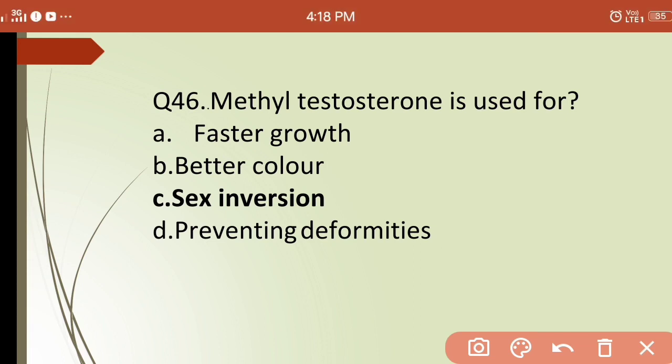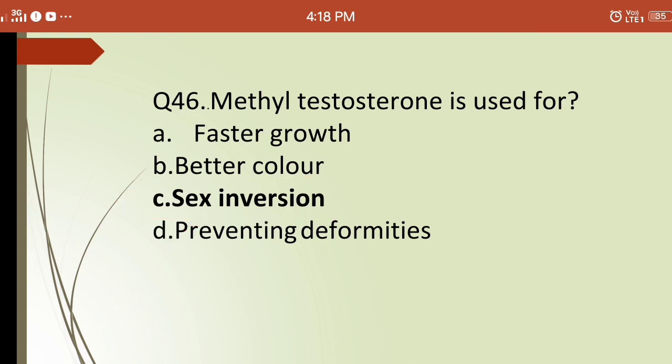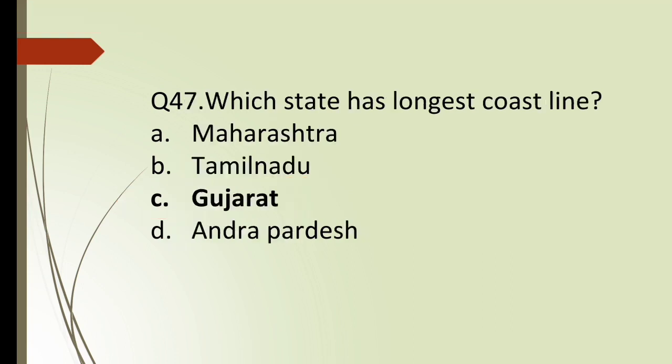Forty-sixth question: methyl testosterone is used for which purpose? Options are: (a) faster growth, (b) better color, (c) sex inversion, (d) preventing deformities. The correct answer is (c) sex inversion — methyl testosterone is used for sex inversion in fishes.